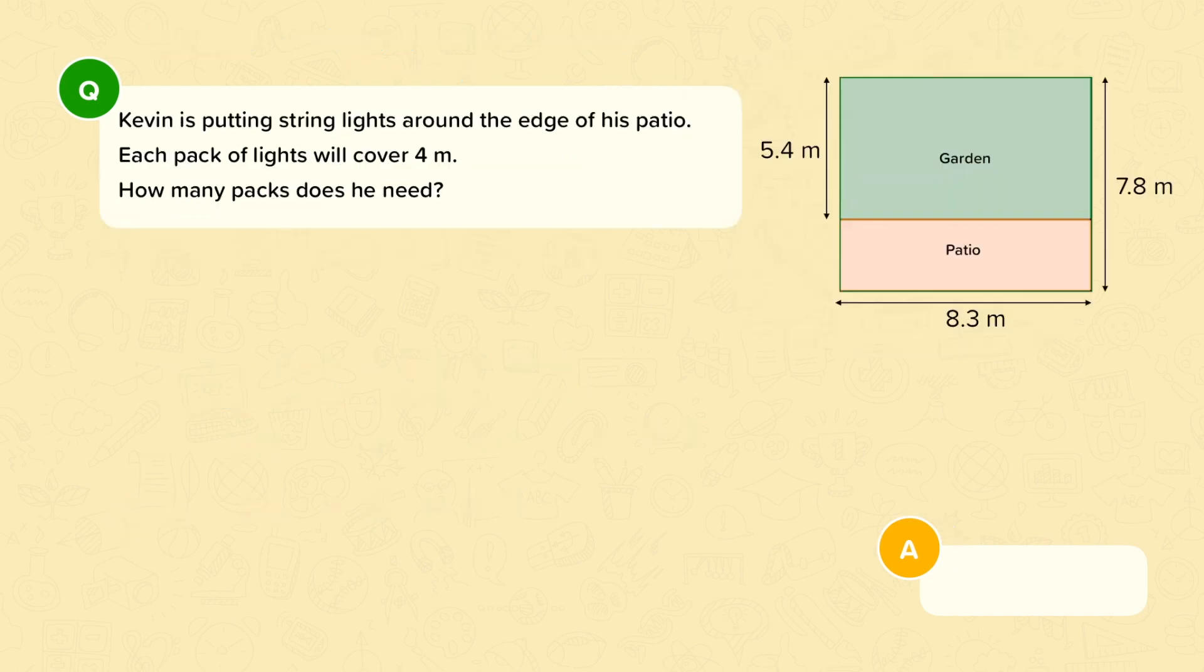Now we'll do a slightly more challenging example. Kevin is putting string lights around the edge of his patio. Each pack of lights will cover 4 metres. How many packs does he need? First let's look at the patio. To work out the perimeter we will need the length and the width. But we're not actually given the width of the patio. We will need to work that out from the rest of the measurements in the garden.